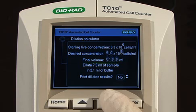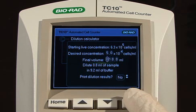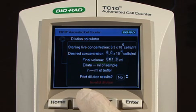If your experimental procedure requires you to adjust the cell concentration, use the integrated dilution calculator to determine the volume of cell suspension to use.